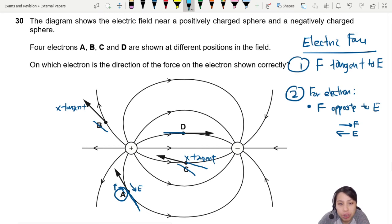Let's check D. So at D, electric field line is pointing this way, to the right. Force is also pointing to the right. Nope, that's a proton. This should be a positive charge.